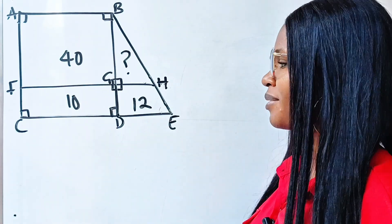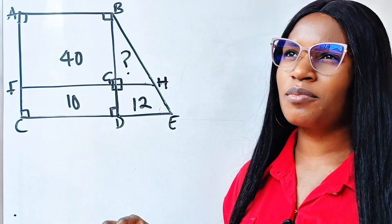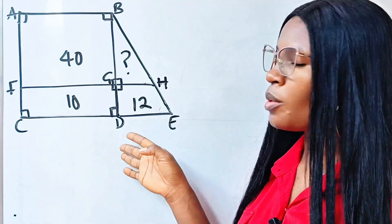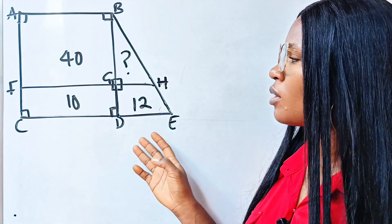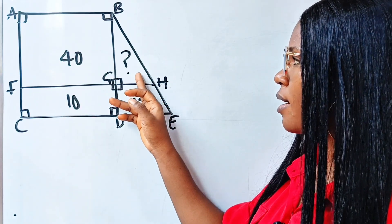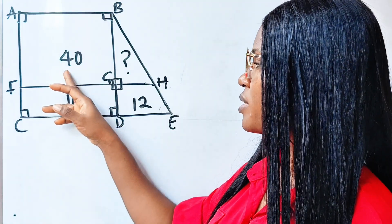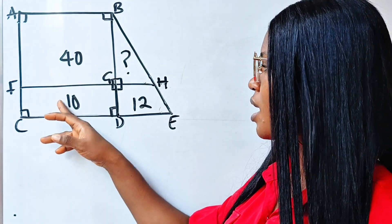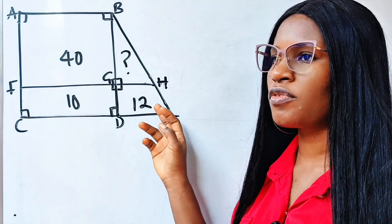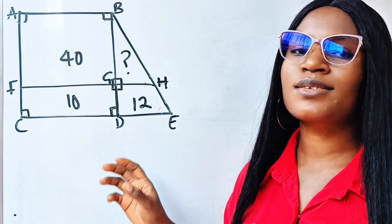Welcome back to my channel. Today we have an amazing, simple but tricky geometric question to solve. We are asked to find the area of this portion. If the area of this part is 40, the area of this part is 10, and the area of this portion is 12. Please note this diagram is not to scale. Now let's get to work.